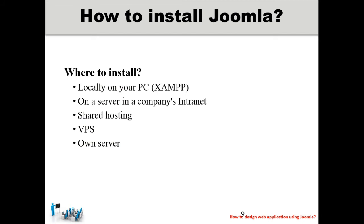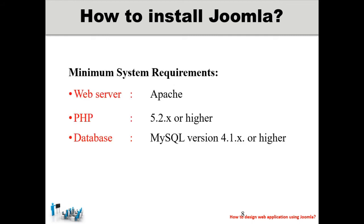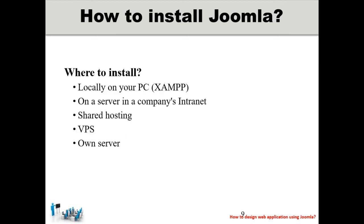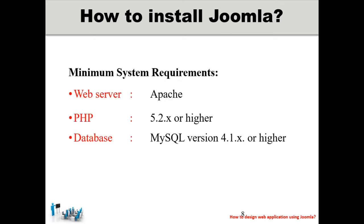An important question is where and how to install Joomla. You can install Joomla in two ways: either on a local machine (your PC) or on a web server. If you install on a local PC, you need Apache, PHP, and MySQL — all three — installed on the local system. However, integrating all three separately is very complex if you don't have sufficient technical knowledge.